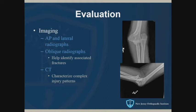In terms of evaluation, you want to get good AP and lateral radiographs. You can consider oblique x-rays to look for associated fractures that aren't necessarily visible. If there are fractures, typically I'll order a CT scan just to characterize the fracture further.